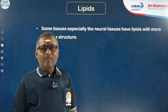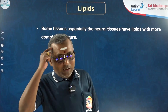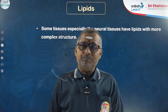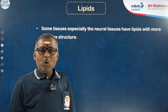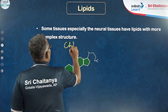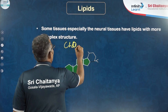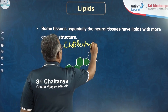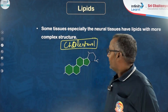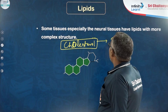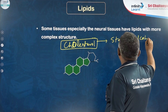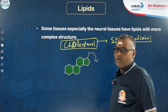Some lipids present in neural tissues are more complex in structure — for example, myelin and sphingomyelin. Cholesterol is another important component. Cholesterol is a steroid alcohol.